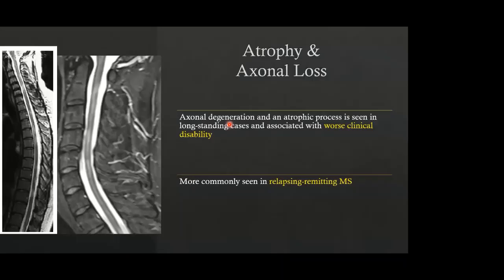The third pattern is atrophy and axonal loss. This is seen in long-standing cases and is associated with worse clinical disability. It is seen in the chronic relapsing-remitting forms of MS. On these images, thinning of the cord can be seen in multiple locations where the plaques are present, indicating the atrophic or axonal loss pattern.